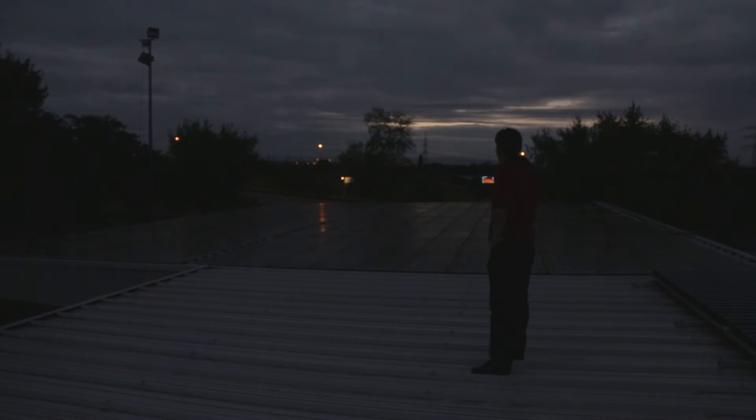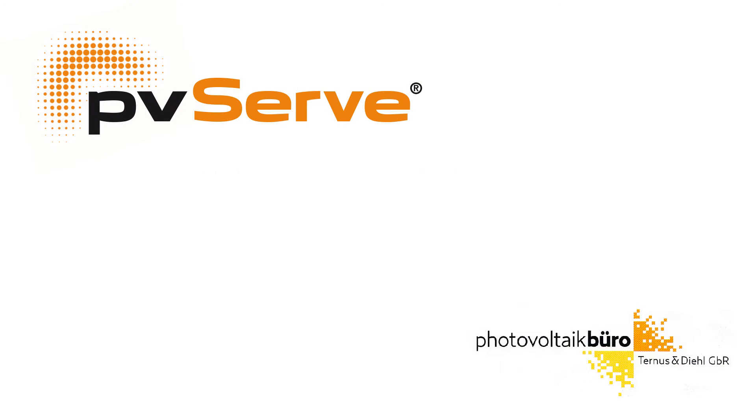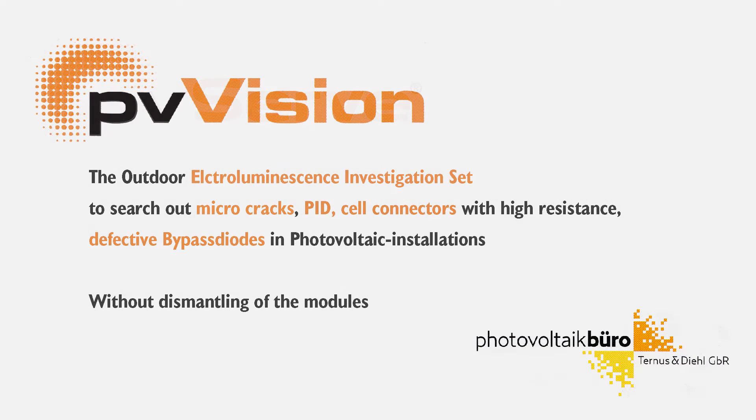This method is used to find how strings are arranged on a roof if there is no documentation. It can also be used to detect defective bypass diodes, hot spots, and cell connections with great resistance, without a lot of sunlight, and even at night.